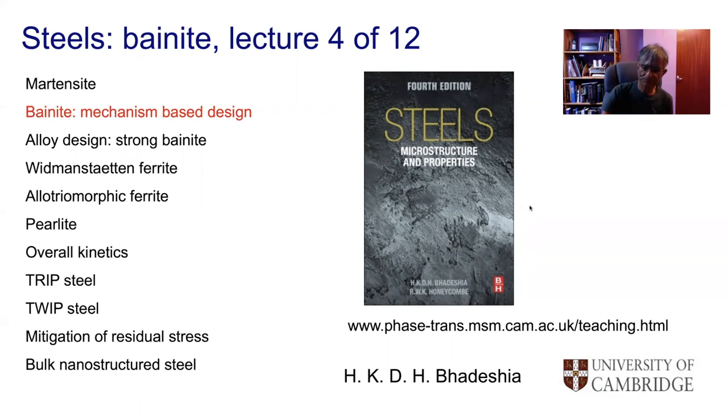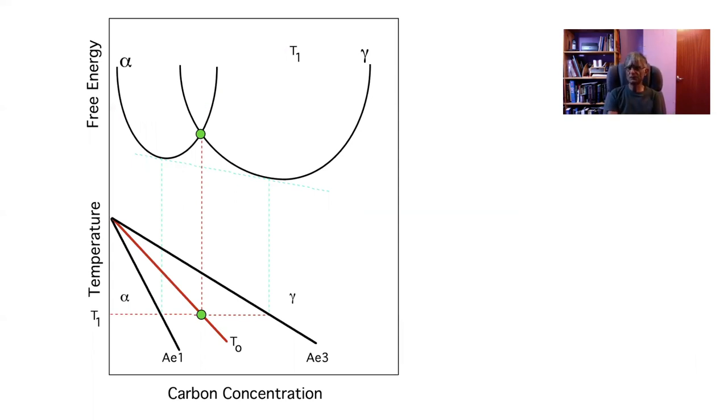Just to remind you, this is the construction that leads us to the concept of the T0 curve. If this is the free energy curve of ferrite at temperature T1 and of austenite at the same temperature versus carbon concentration, then the equilibrium compositions are given by constructing a common tangent to those curves. The locus of all these points as a function of temperature gives us the equilibrium phase boundaries, the AE1 and AE3, which contain the alpha plus gamma phase field. There is a point here where austenite and ferrite of the same chemical composition have identical free energies, and the locus of those points gives the T0 curve.